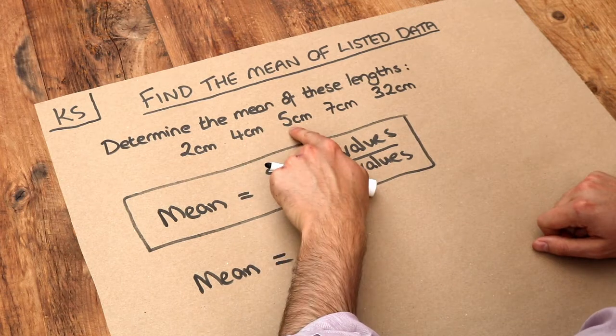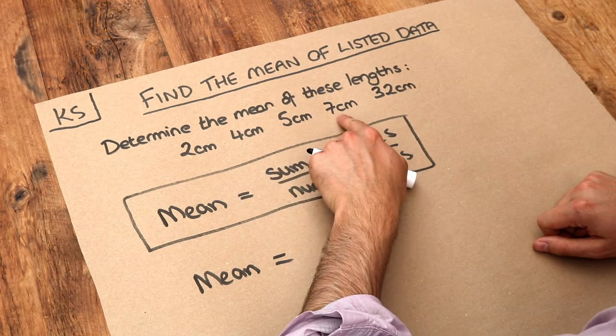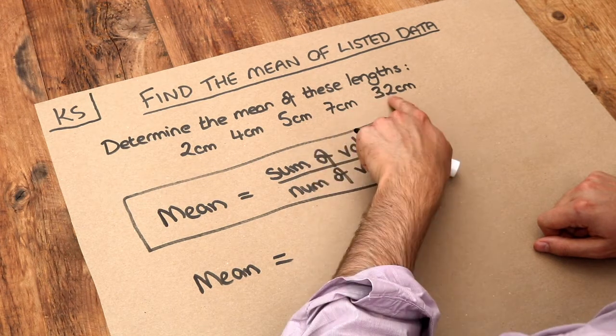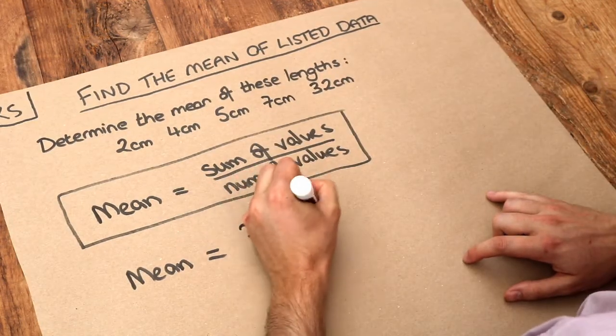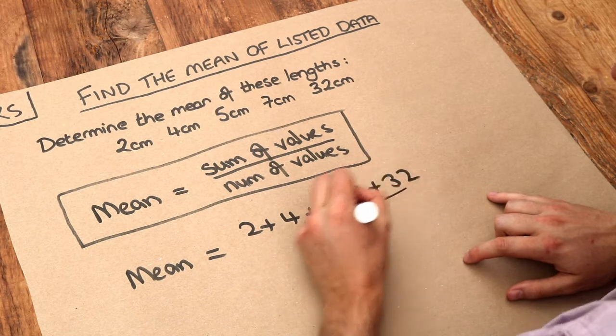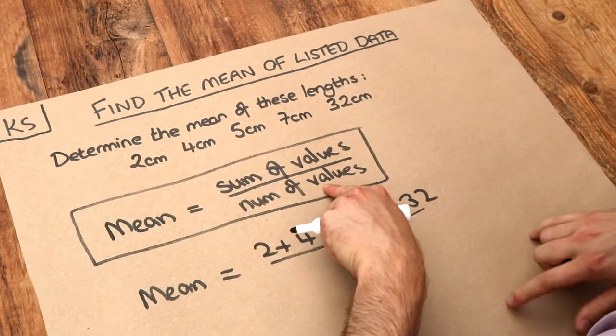So 2 plus 4 is 6, plus 5 is 11, plus 7 is 18, plus 32 is 50. But let's just actually write the full working here and then we're going to divide that by the number of values there are. How many values are there?